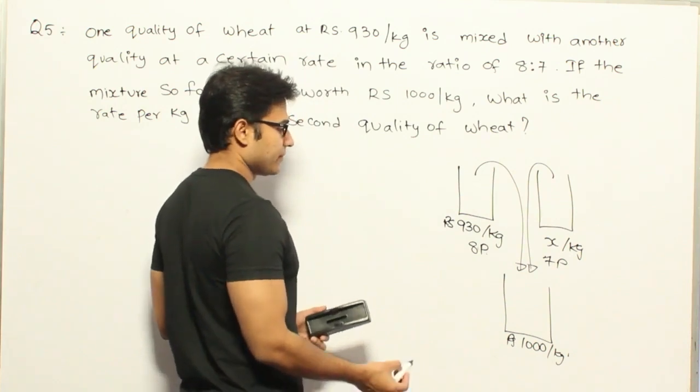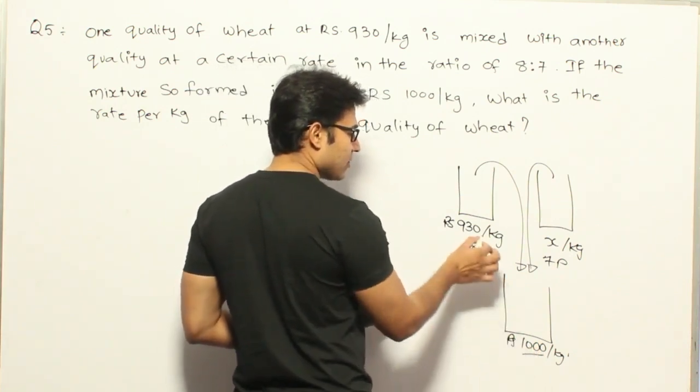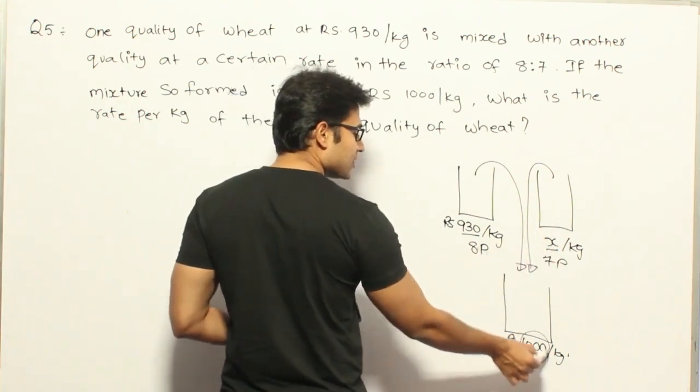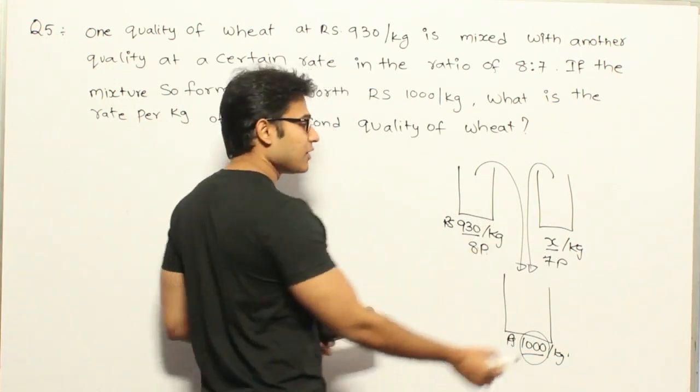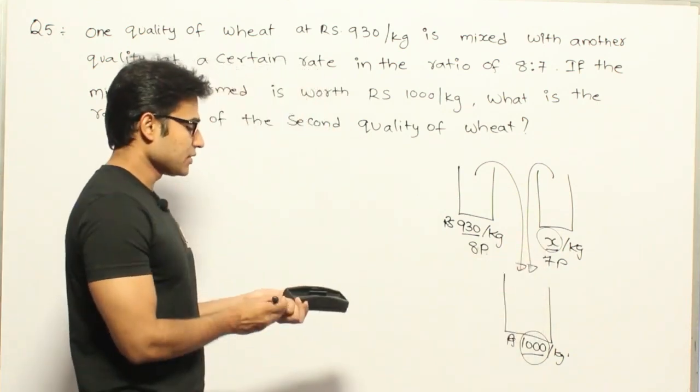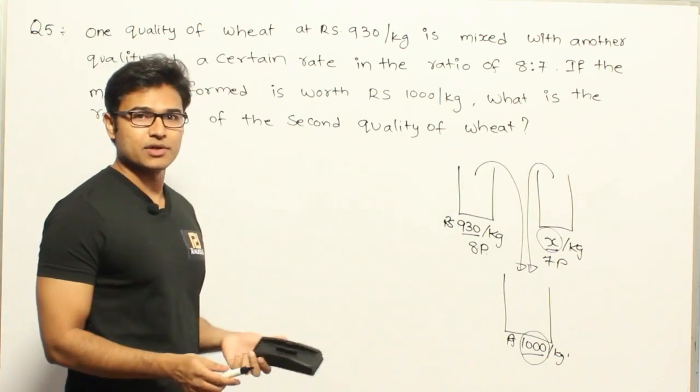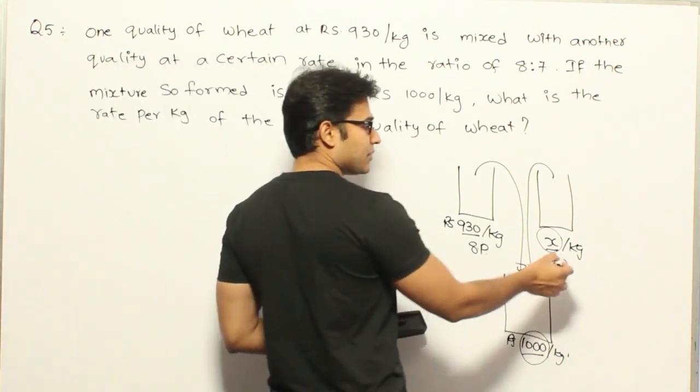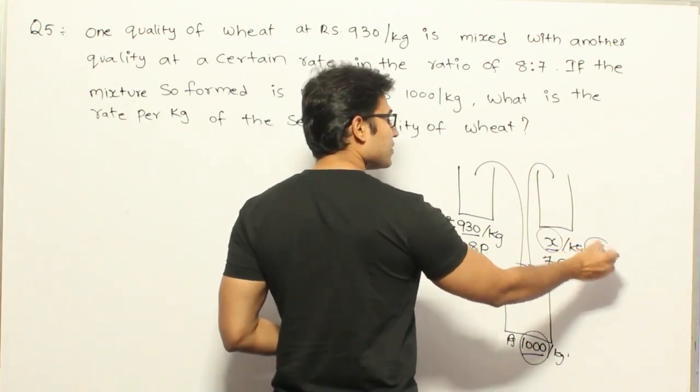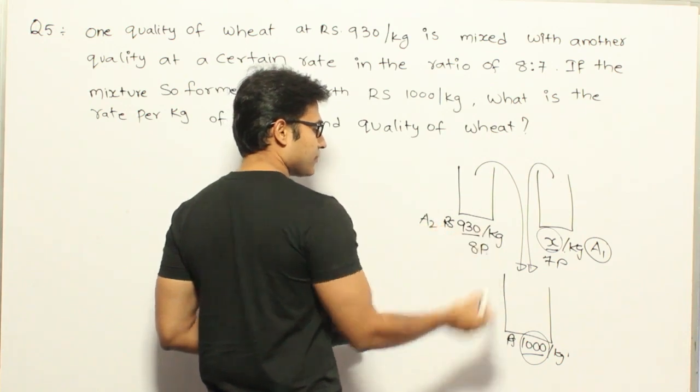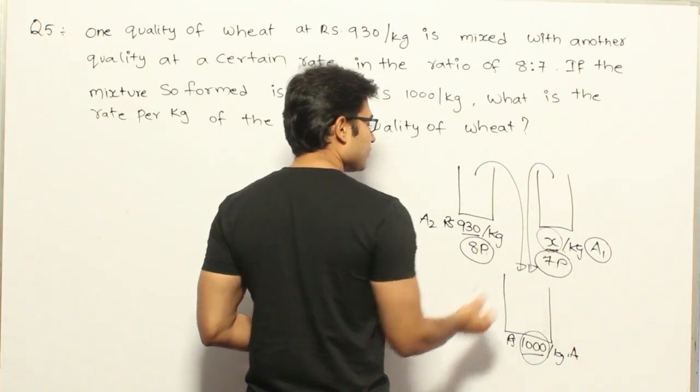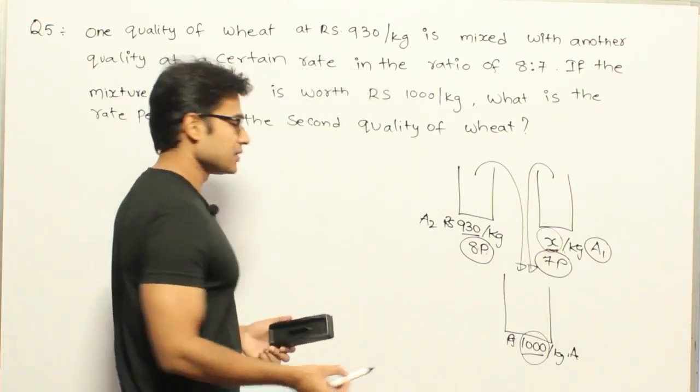And the cost of this wheat turned out to be Rs. 1000 per kg. So I already told you that if you assume that this is the final average, this is the average of one group, this is the average of other group, I already told you that the final average always lies between these two averages. Isn't it? Therefore this X is supposed to be greater than 1000. So how to solve it is just by using the allegations formula. Now in that case you have to assume that this is the higher side, which means just assume this one is A1, X is A1, and you can assume that this is A2 and you can assume that this is A.